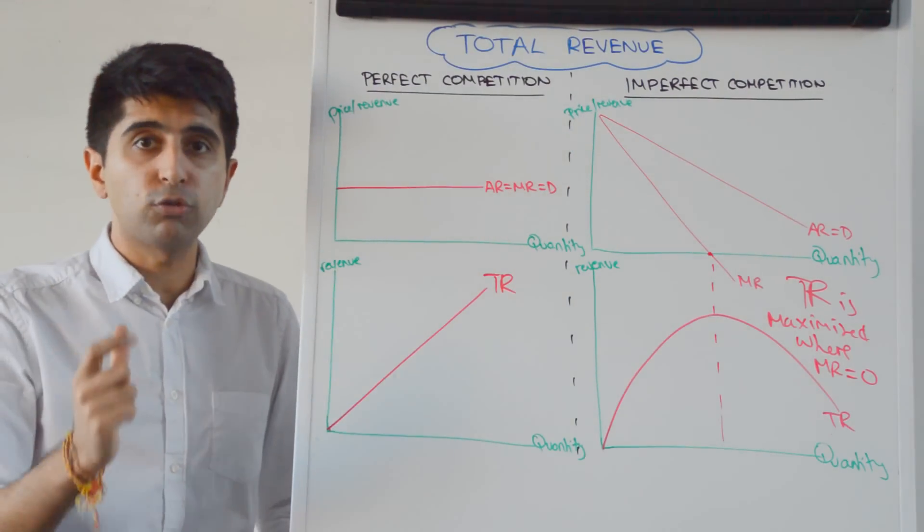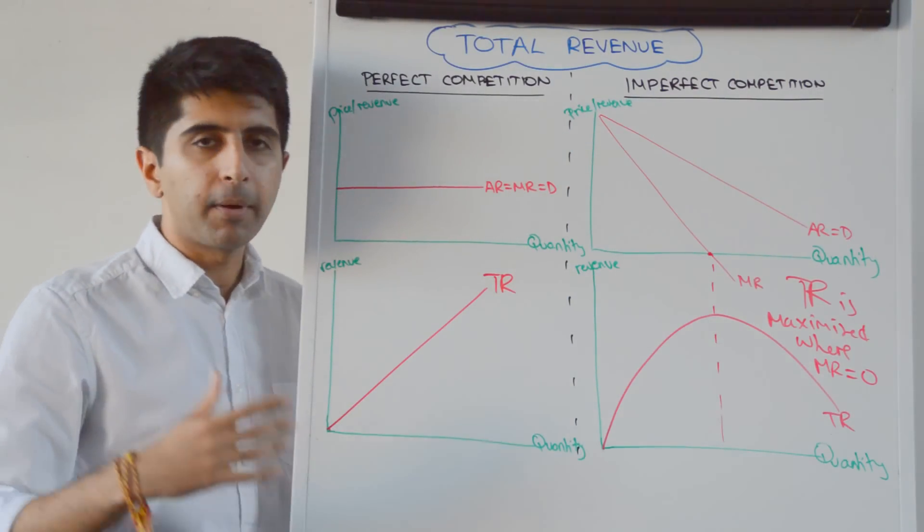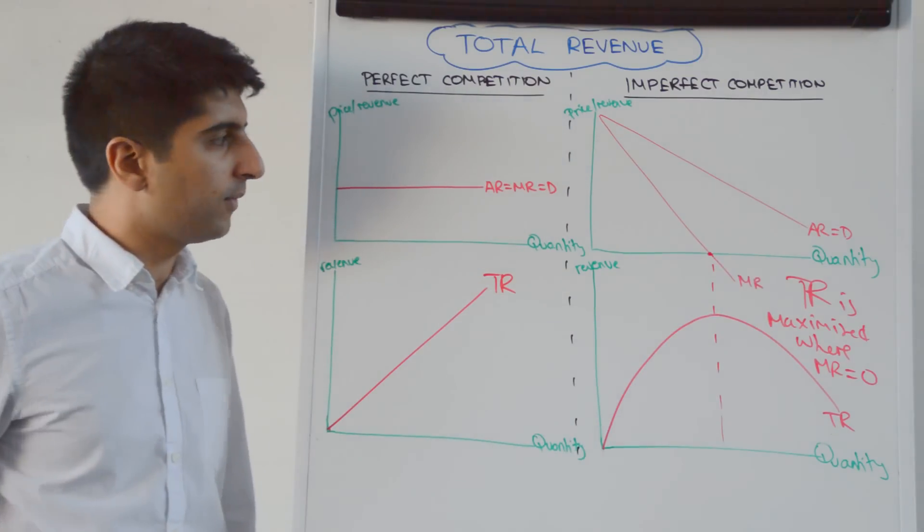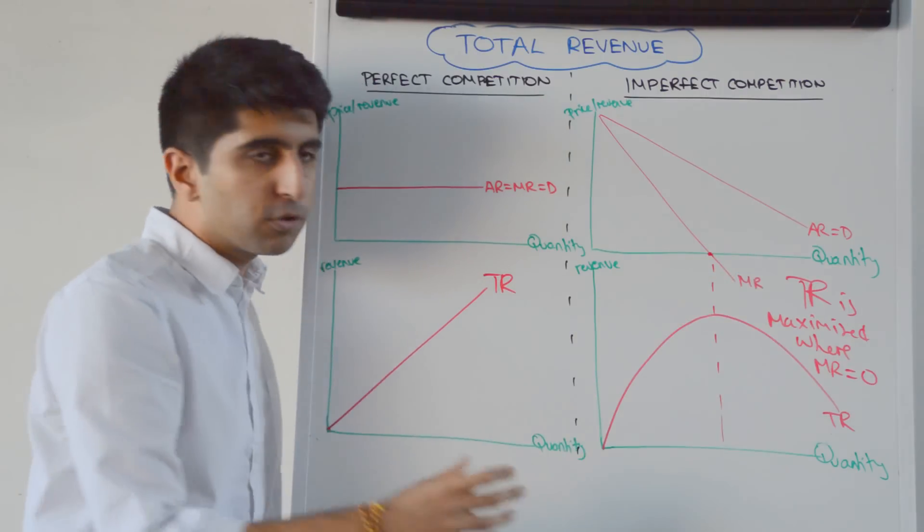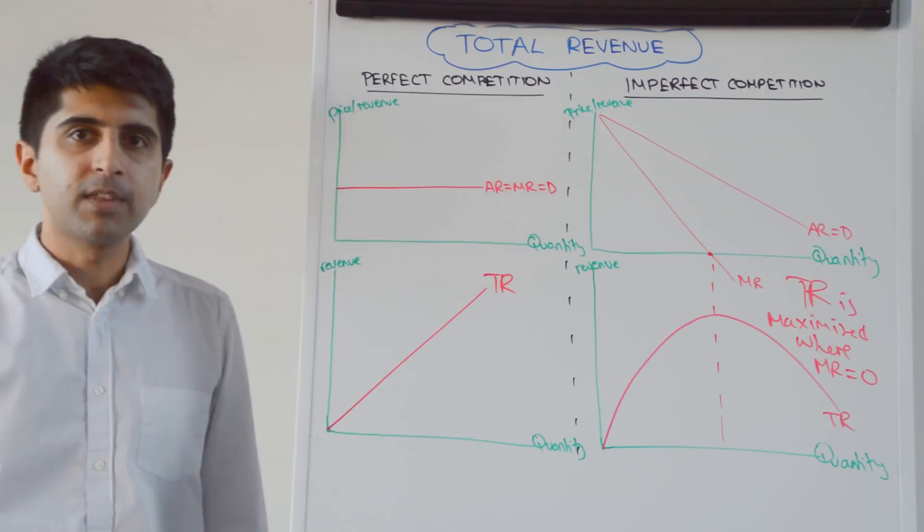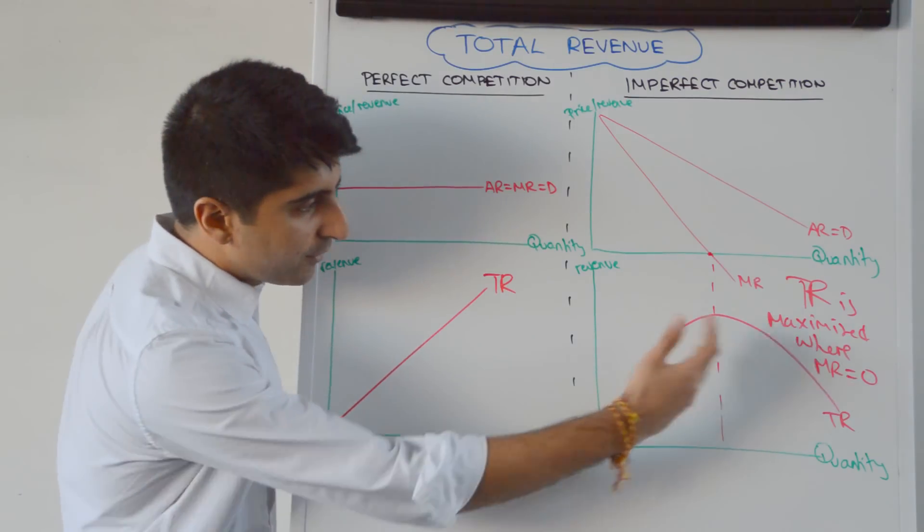There is no more extra revenue to be had at all by selling more units. So at MR is zero, we hit the peak of the total revenue curve. Thereafter, marginal revenue goes negative, which pulls down total revenue. So that explains the shape of this parabola.